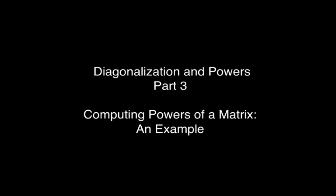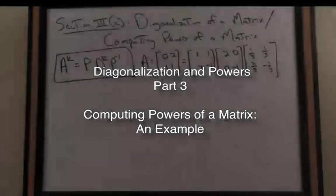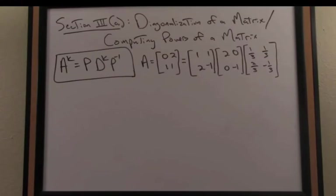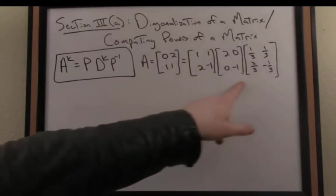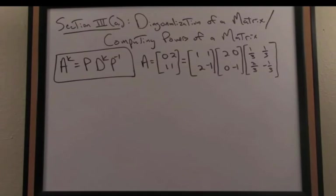Let's apply this idea of using the diagonalization of a matrix to efficiently compute higher powers of a matrix. Going back to our previous example where A was as follows, and we computed the diagonalization as you'll recall of A written as such.